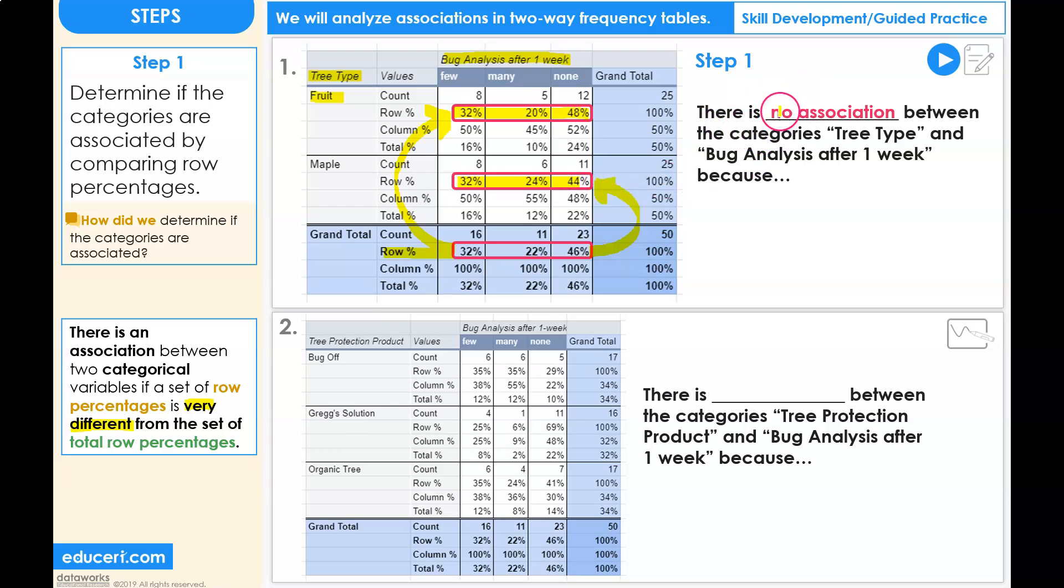So, there is no association between the categories tree type and bug analysis after one week because the set of row percentages are almost equal.